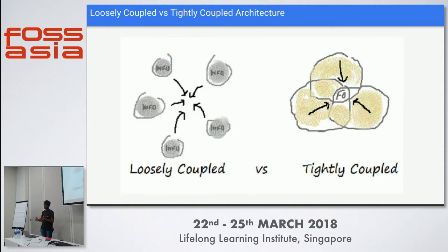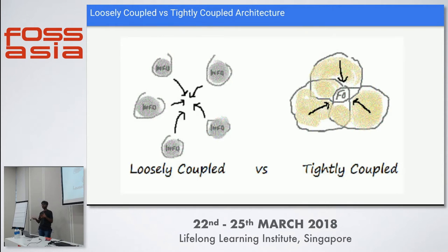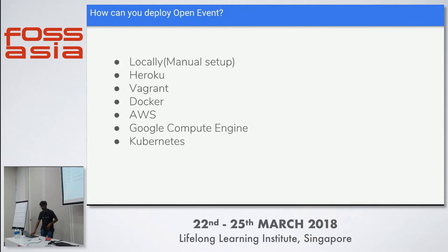This helps you scale your project, manage it more easily, and remove a lot of redundancy. The loosely coupled REST architecture offers several deployment options: you can set it up locally, deploy to Heroku or Vagrant, use Docker for containerization and scaling, or use AWS, Google Compute Engine, or Kubernetes on bare instances.